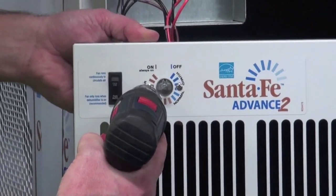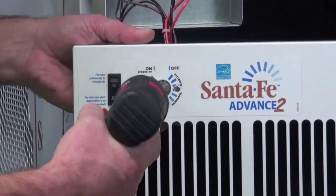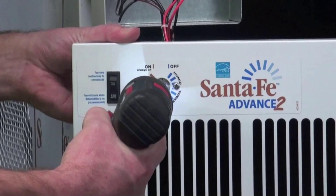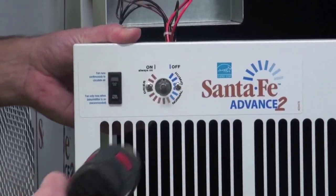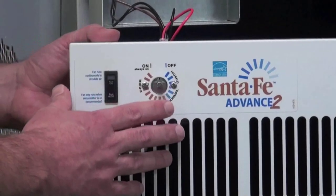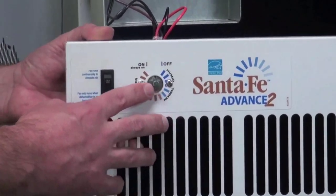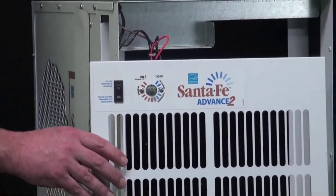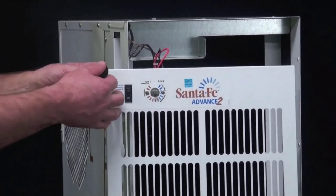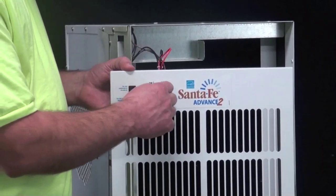Now when you screw these two screws in, you don't want to get them too tight. You basically just want to snug them down. Now you have the dehumidistat fastened to the grille, so the next thing you can do is put the black control knob back onto the post.